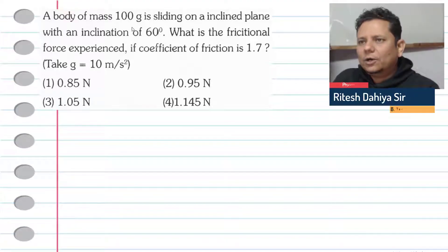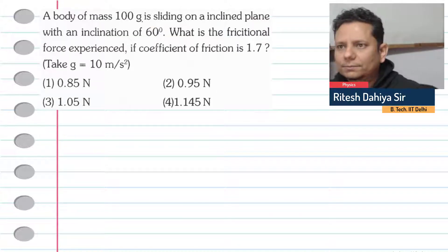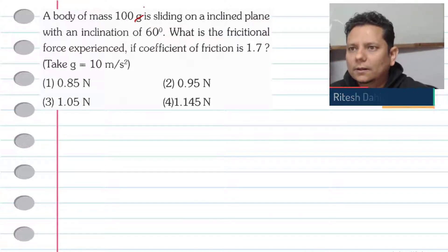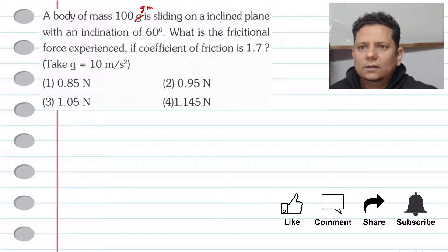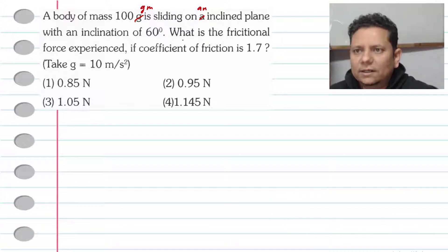Next question. A body of mass 100 grams is sliding on an inclined plane with an inclination of 60 degrees. What is the frictional force experienced if the coefficient of friction is 1.7? Notice the mu value is greater than 1.